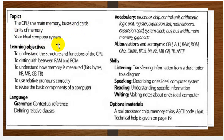Learning objective. What should we do and what will we learn from this unit? To understand the structure and function of the CPU. To distinguish between RAM and ROM. To understand how memory is measured — it means bits, bytes, KB, MB, GB, and TB. What are these expressions? To use relative pronouns correctly. To revise the basic components of a computer and language grammar.